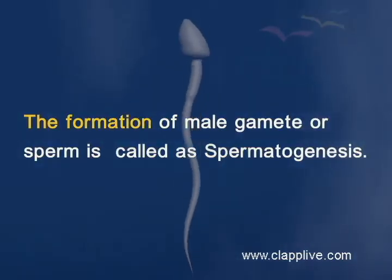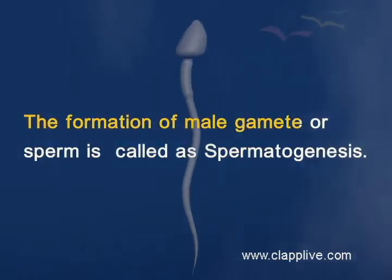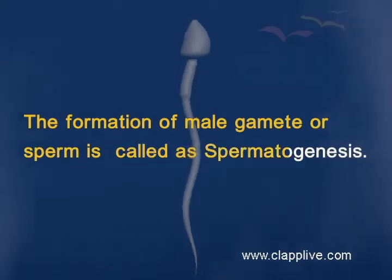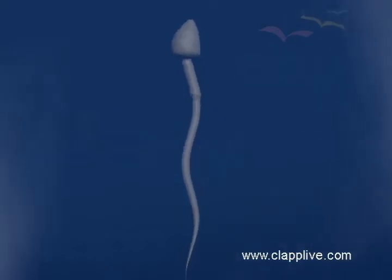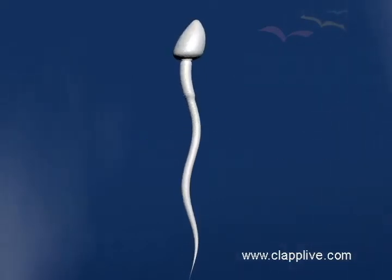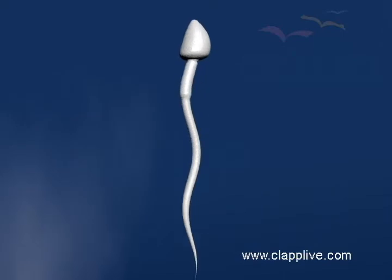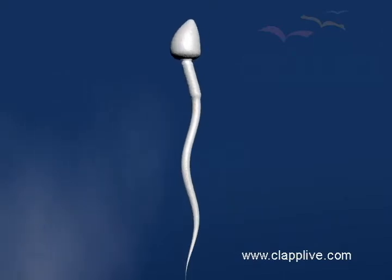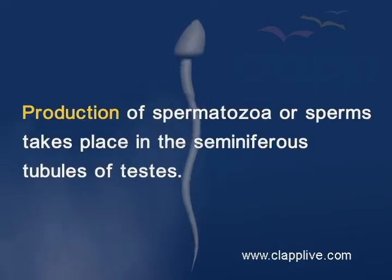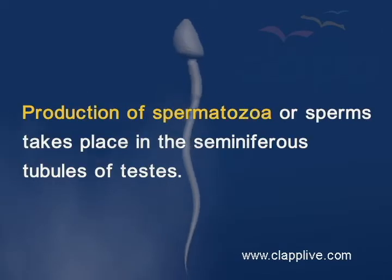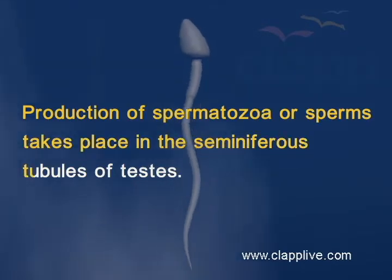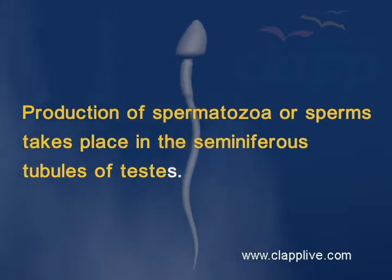The formation of male gamete or sperm is called spermatogenesis. It is initiated in the testes with the beginning of puberty. Production of spermatozoa or sperms takes place in the seminiferous tubules of the testes.